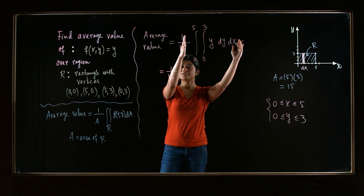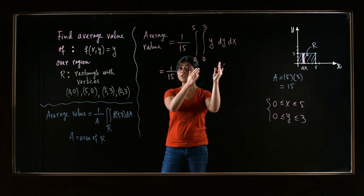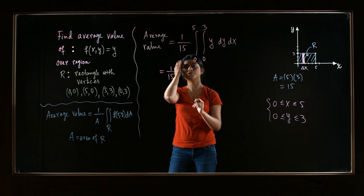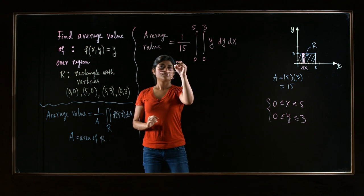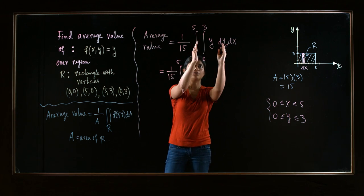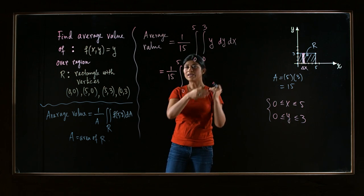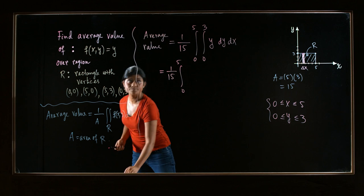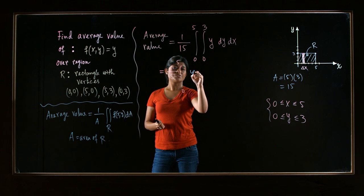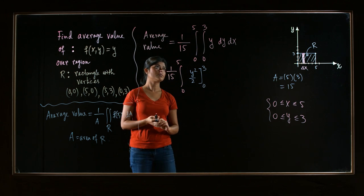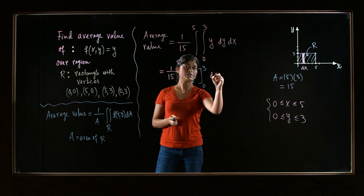So now that we have our integral all set up, let's solve it. It's a double integral. Remember, we ignore the outer one. Just evaluate the inner one first. So from 0 to 5. Now the inside one is in terms of y. The function is y. So the antiderivative is y squared over 2. Evaluate from 0 to 3. And then we have dx.